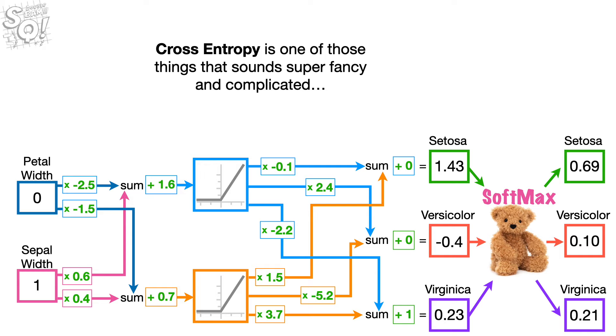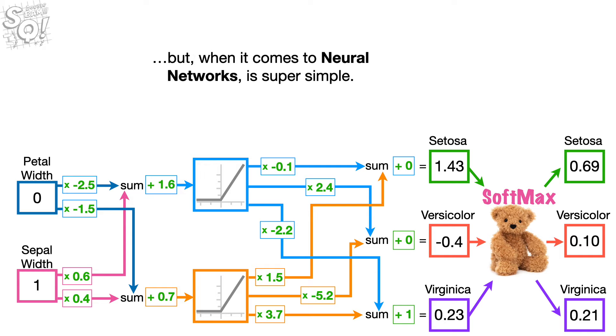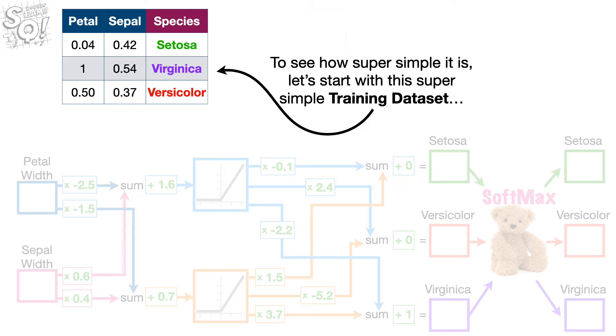Cross Entropy is one of those things that sounds super fancy and complicated, but when it comes to neural networks, is super simple. To see how super simple it is,